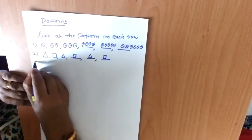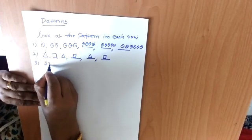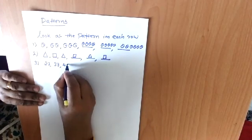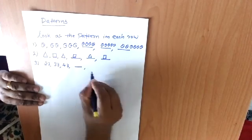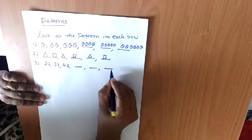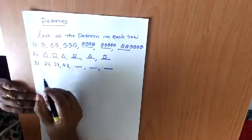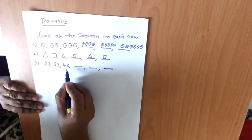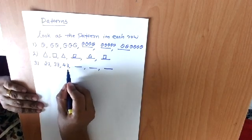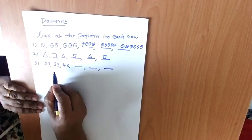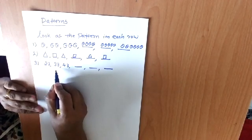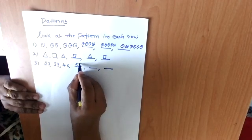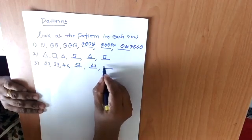Third one: 23, 33, 43 — dash, dash, dash, and dash. See here: first 23, 33, 43. What is the relation? Here the numbers are increasing by 10. Then the next numbers are 53, 63, and 73.